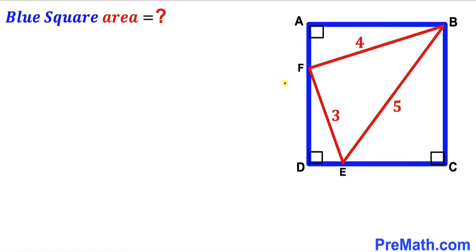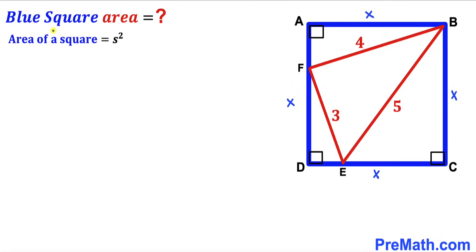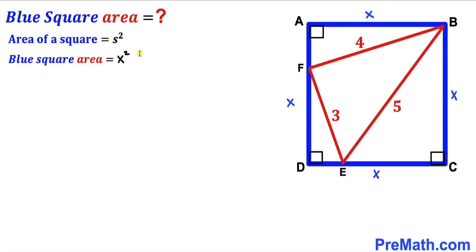We know that we are dealing with a blue square, so all side lengths of the square are equal. Let's assume this side length of the square is X, so all four sides are X. Recalling the area of a square formula: Area = S², where S is the side length. In our case the side length is X, so the blue square area is X². We'll label this as equation number one.